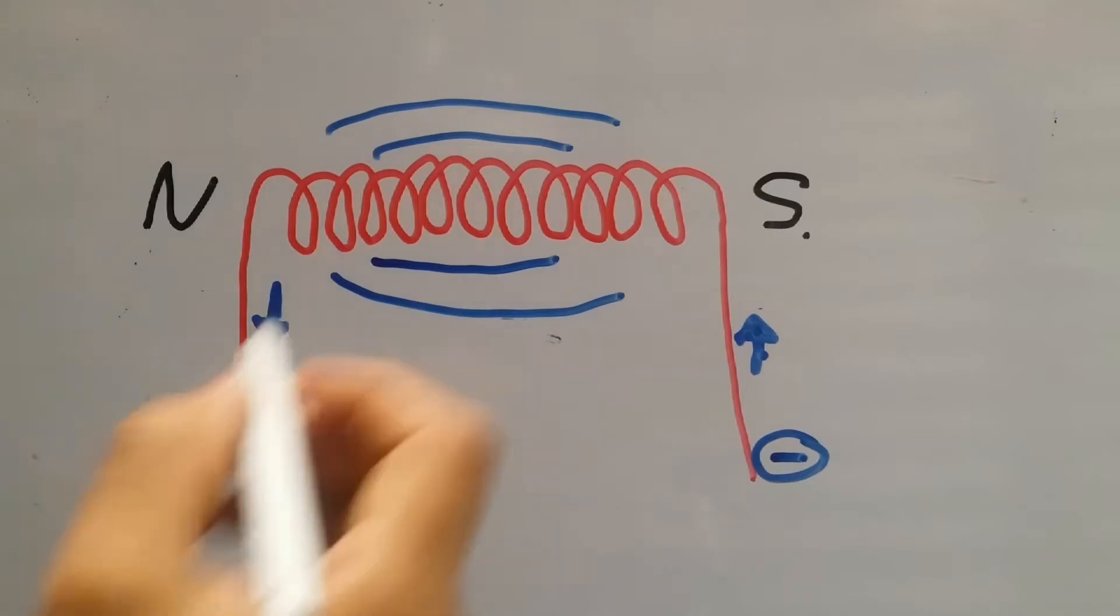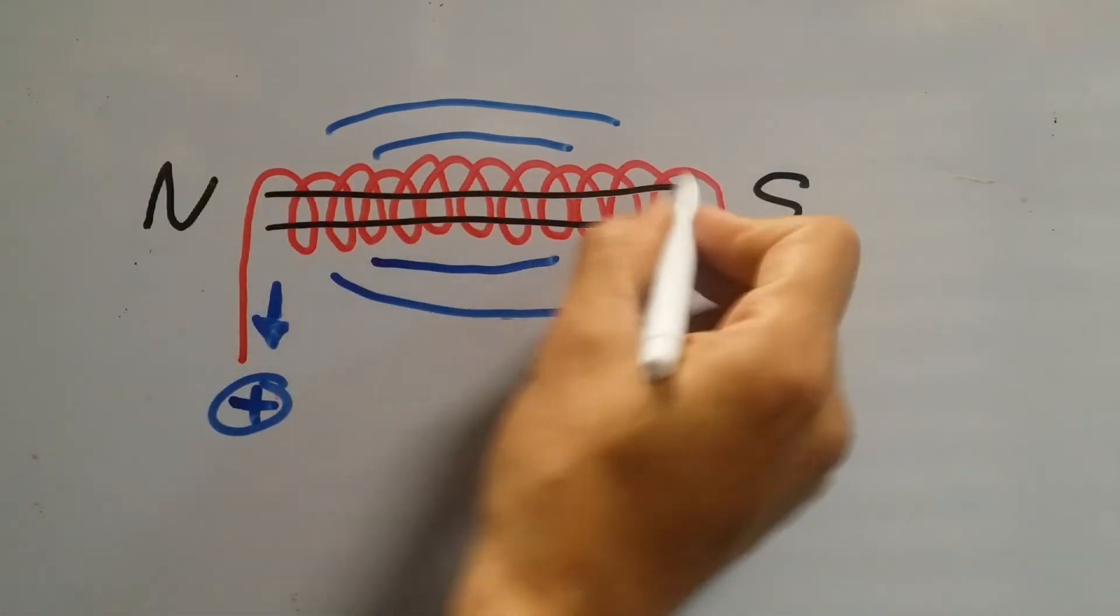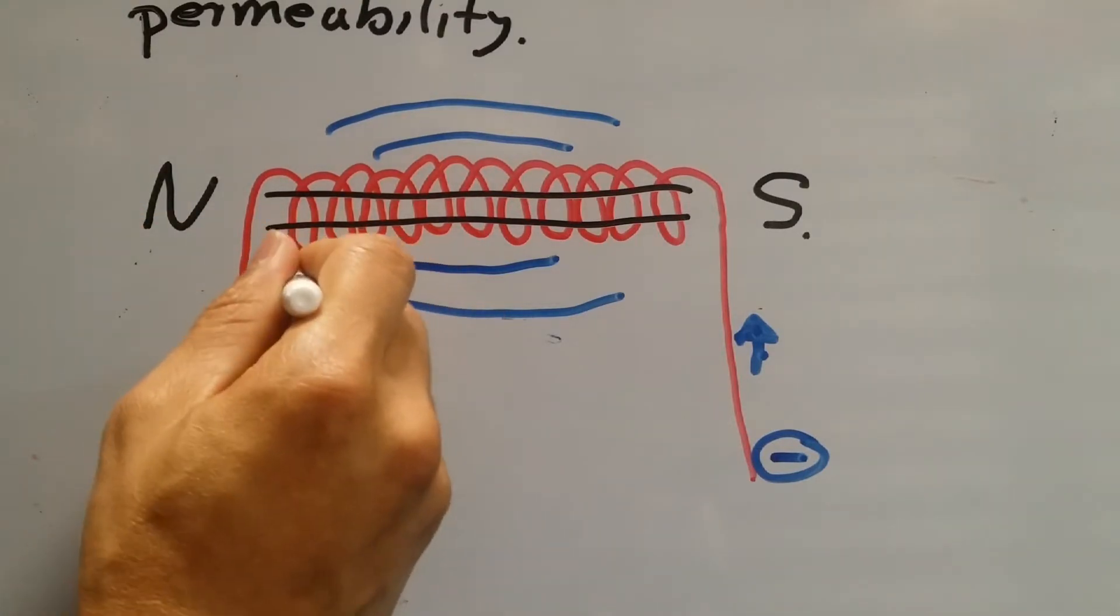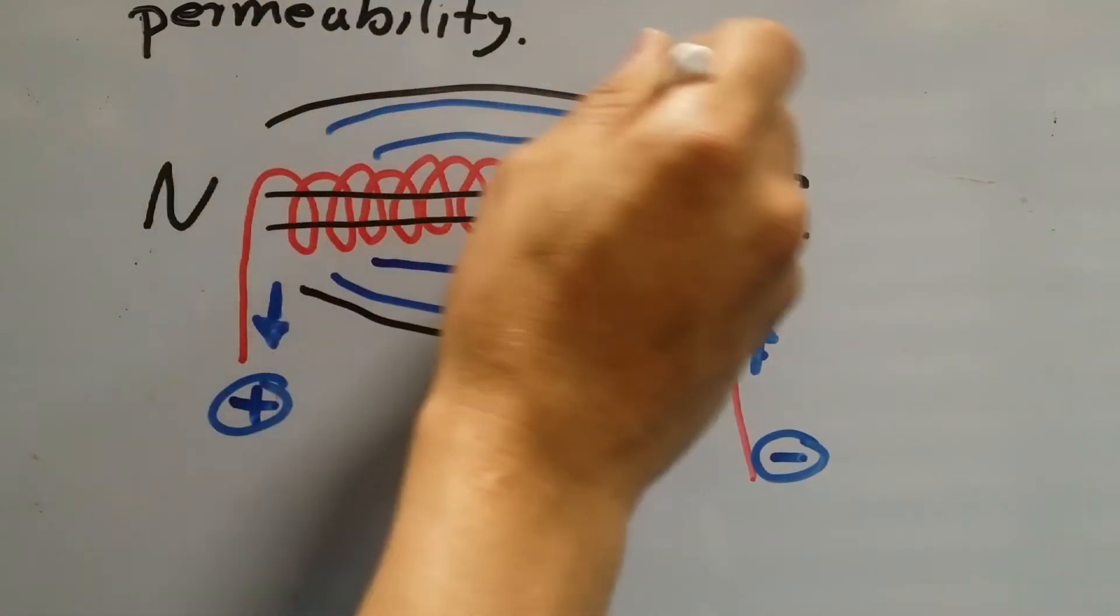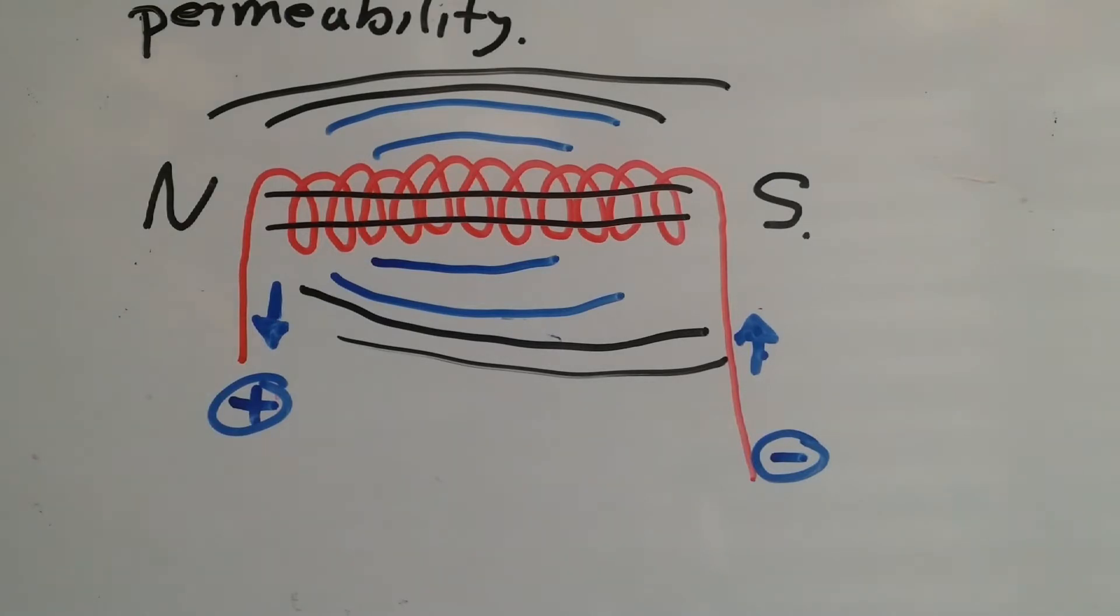To make the electromagnet stronger, we put a piece of metal in the center of it, preferably a highly permeable piece of metal, and what it will do is that it will intensify the magnetic field that surrounds that new electromagnet.